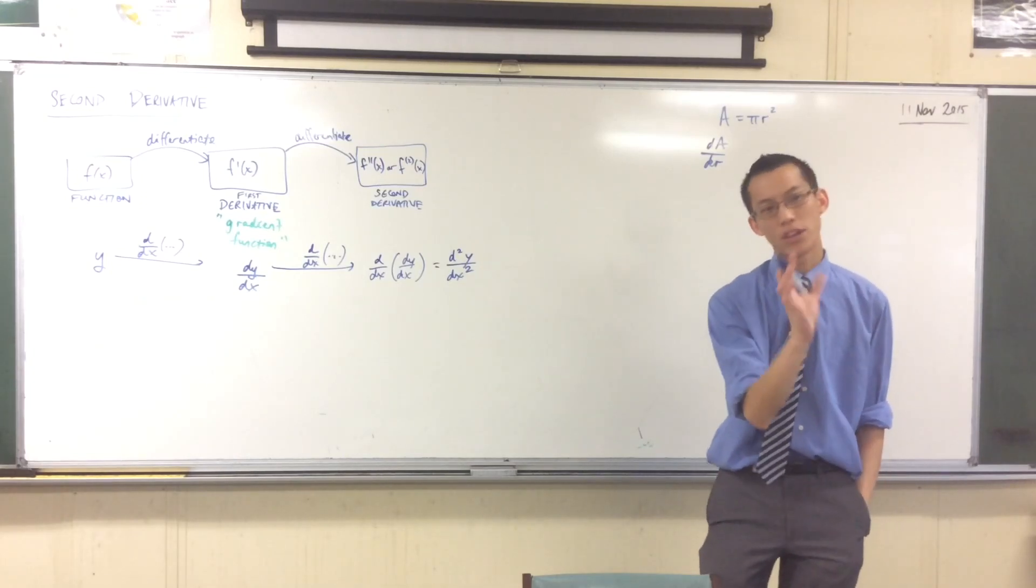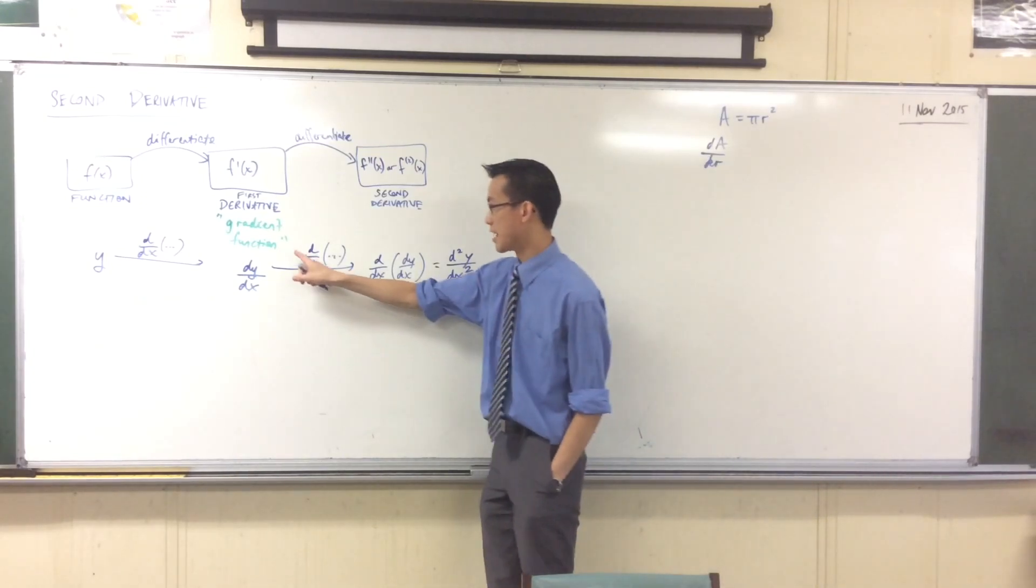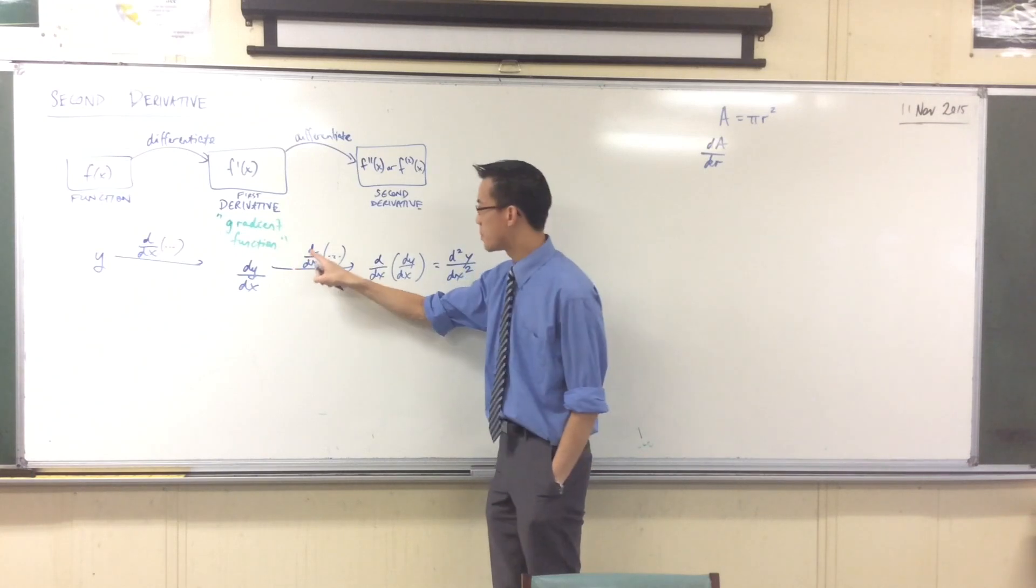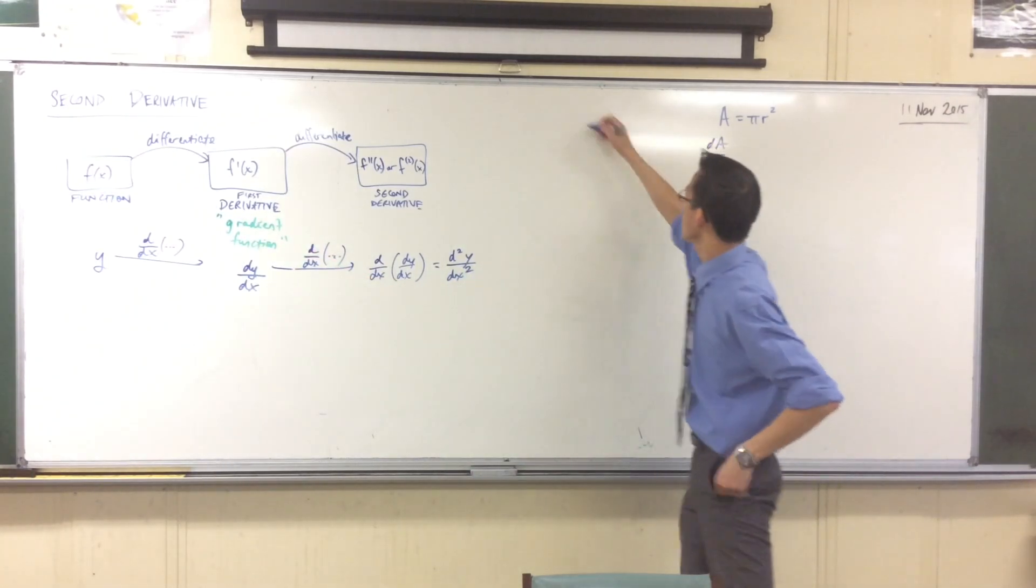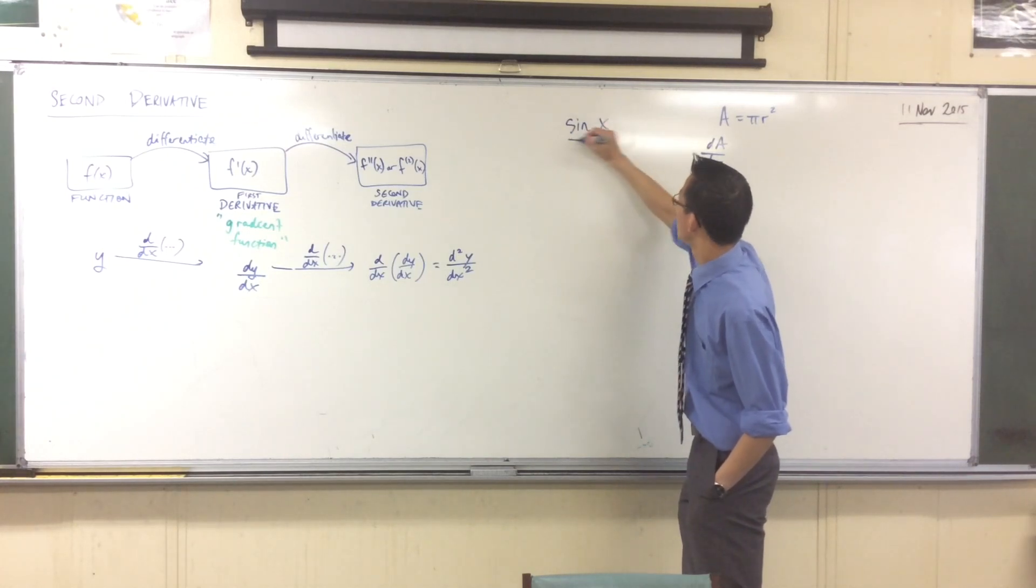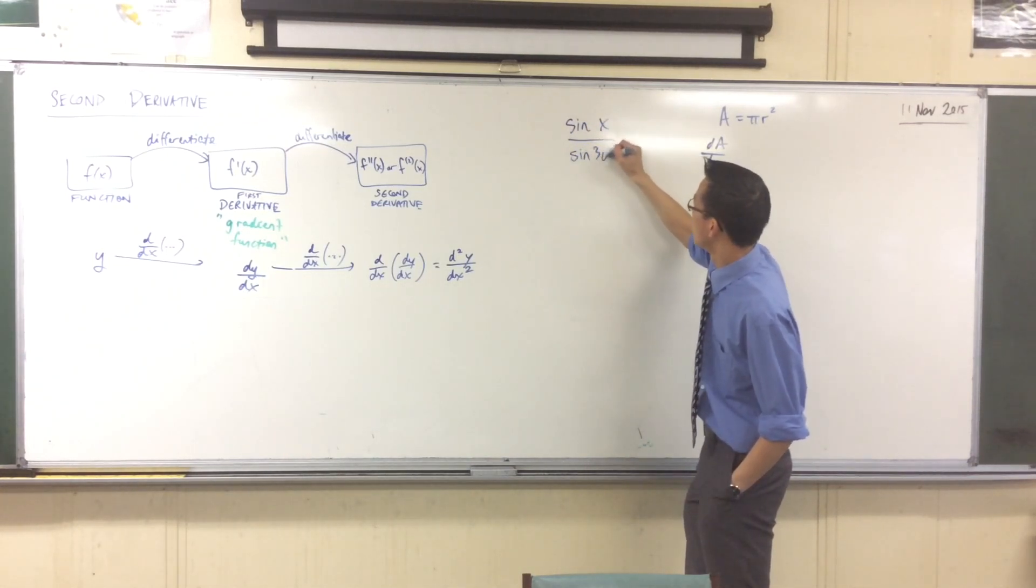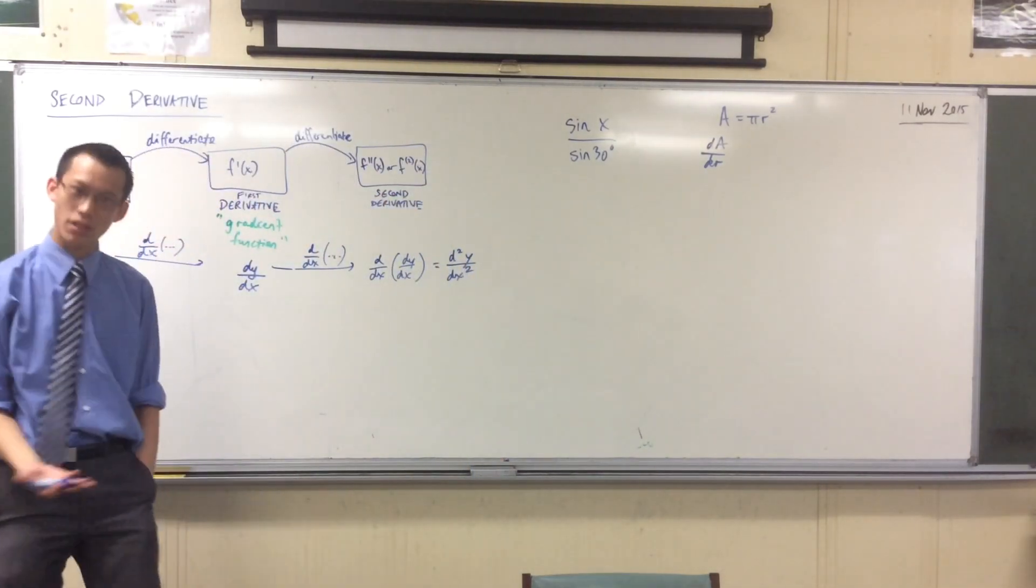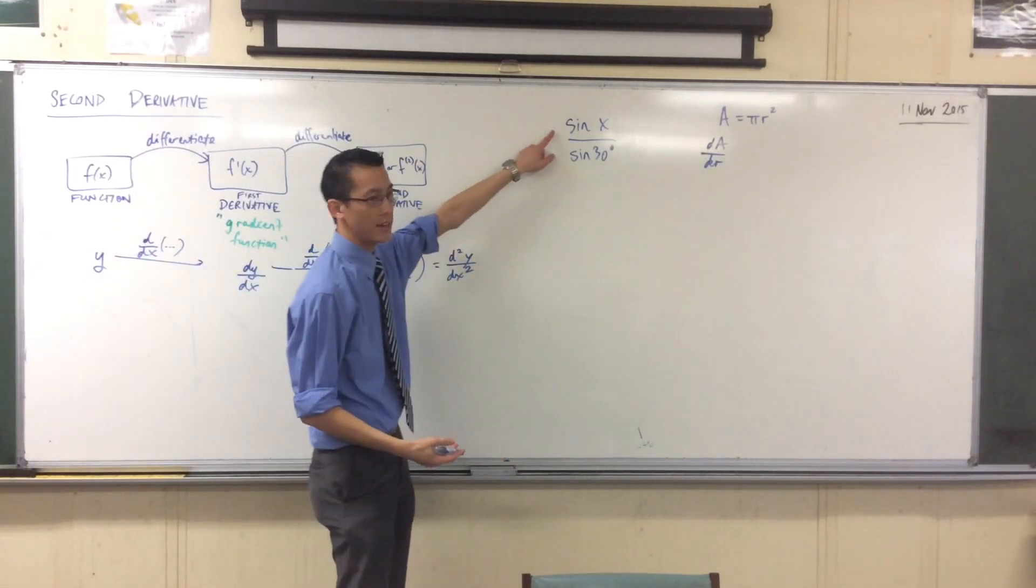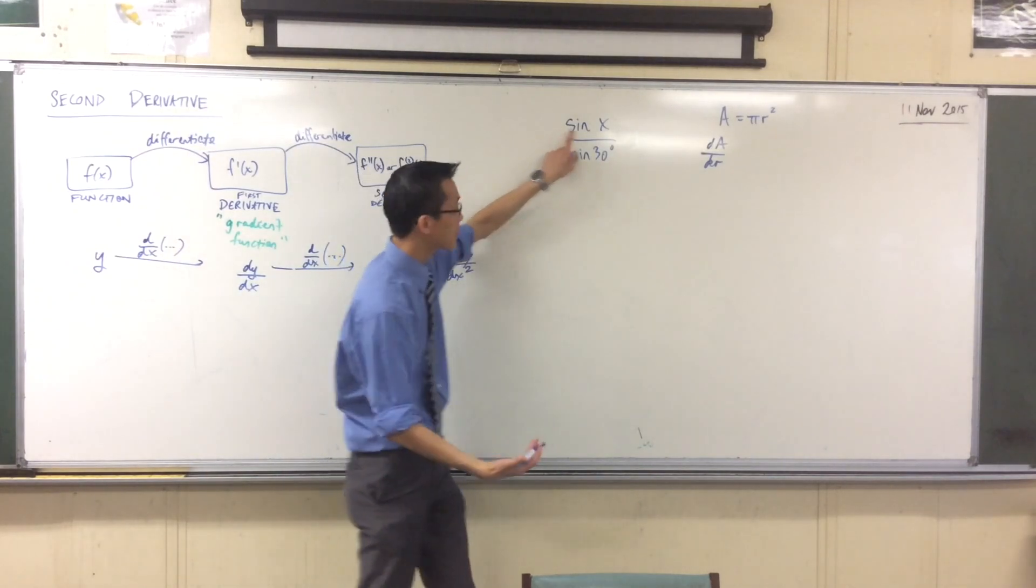The reason why we can't just cancel this D and this D is because that D is actually operating on something, in the same way that you can't cancel the signs and say it's just X on 30 degrees.